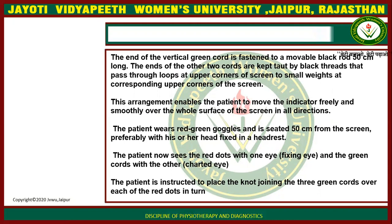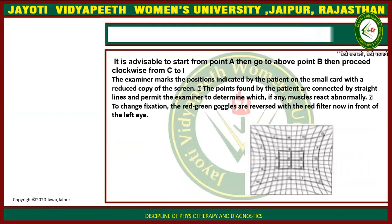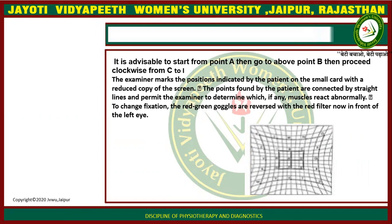The patient wears red-green goggles and is seated 15 cm from the screen, preferably with the head fixed in a headrest. The patient sees the red dots with one eye and the green cords with the other, and is instructed to place the knot joining the three green cords over each red dot in turn. It is advisable to start from point A, then proceed clockwise through C to I. The examiner marks the positions indicated by the patient on a small card with a reduced copy of the screen, and connects the points to determine which muscles react abnormally.